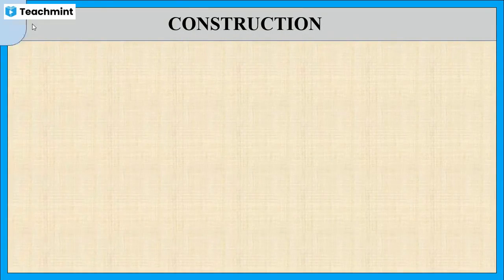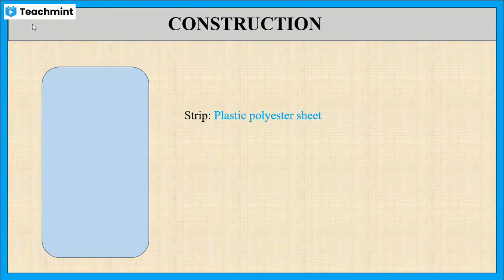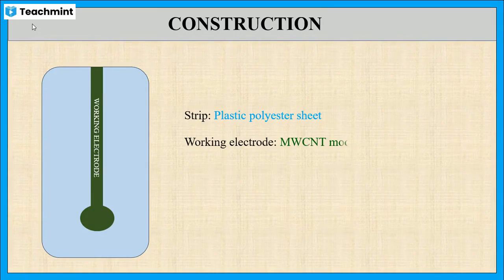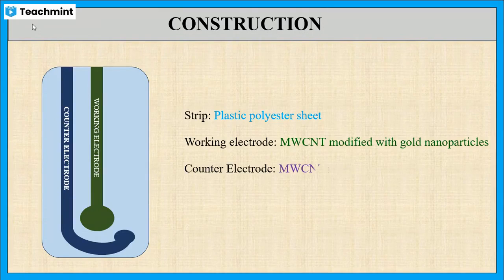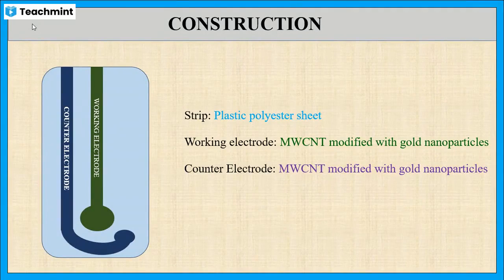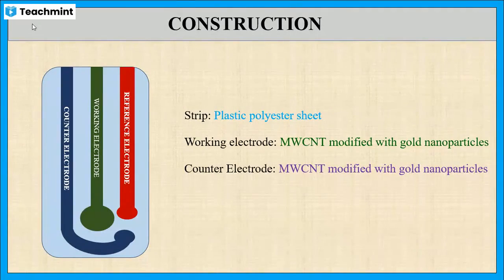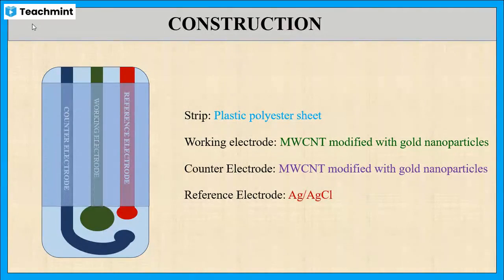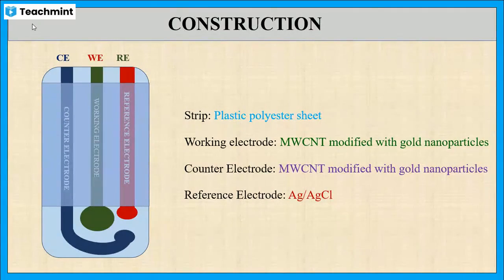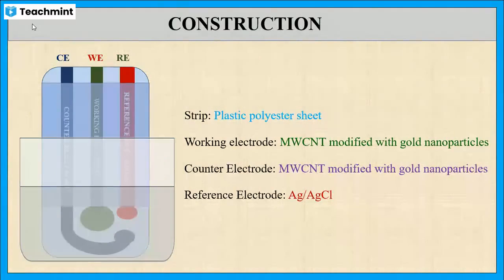This sensor contains a plastic polyester sheet as a strip on which three electrodes are printed. The working electrode and the counter electrode are multi-walled carbon nanotubes modified with gold nanoparticles. The reference electrode is made up of silver chloride, the upper portion is sealed with insulating material, and the strip is connected to an electrical connector and immersed in the analyte solution for measurement.